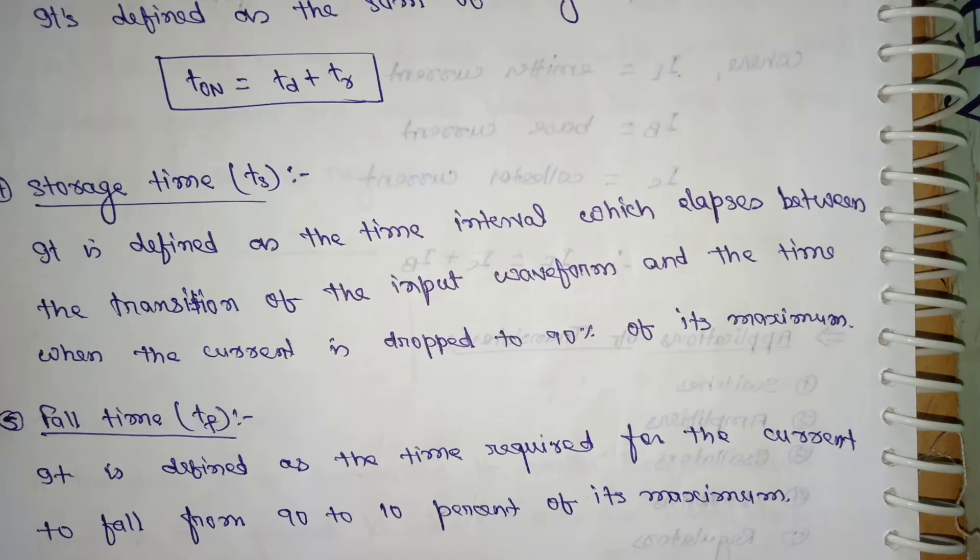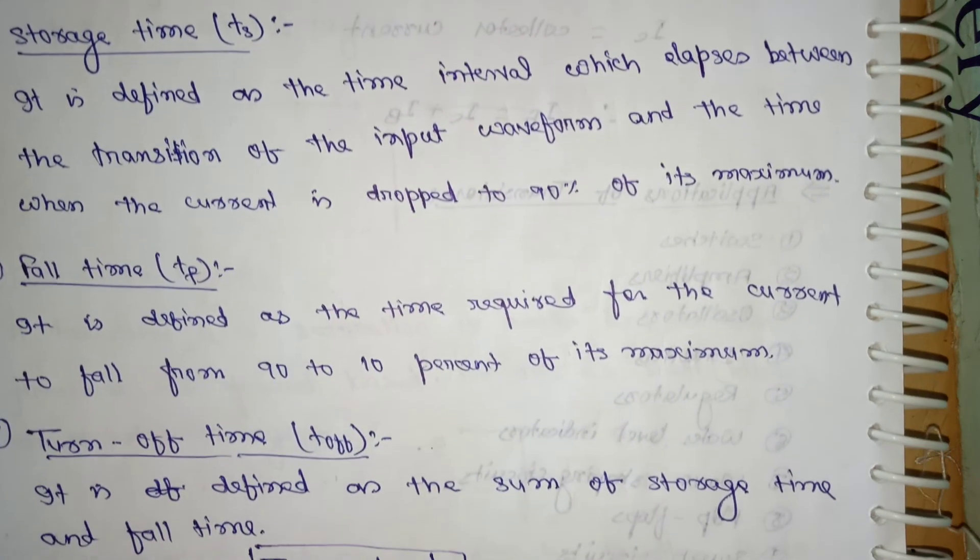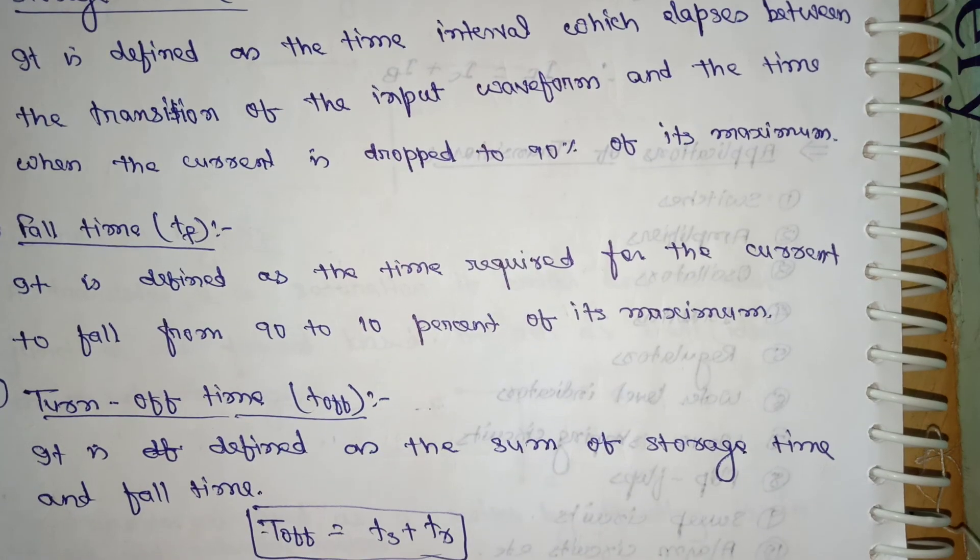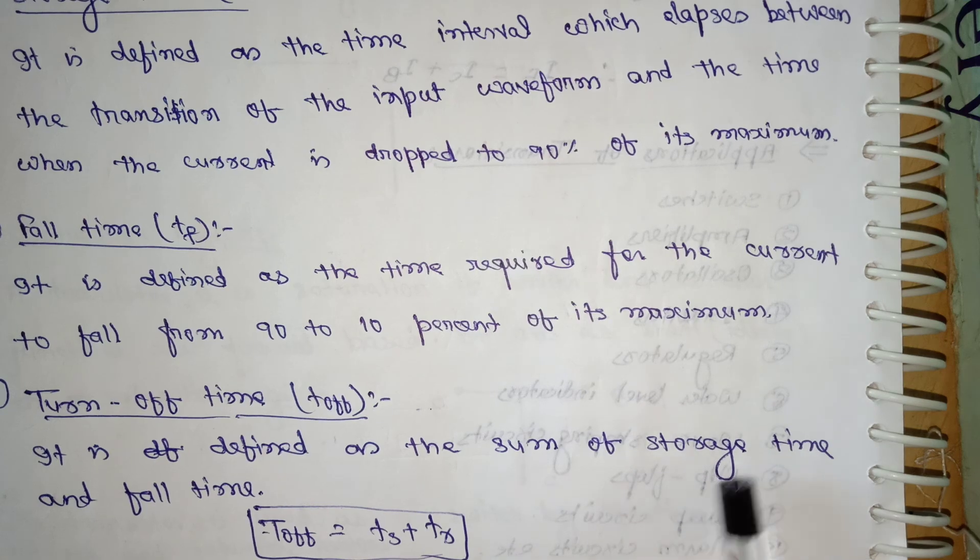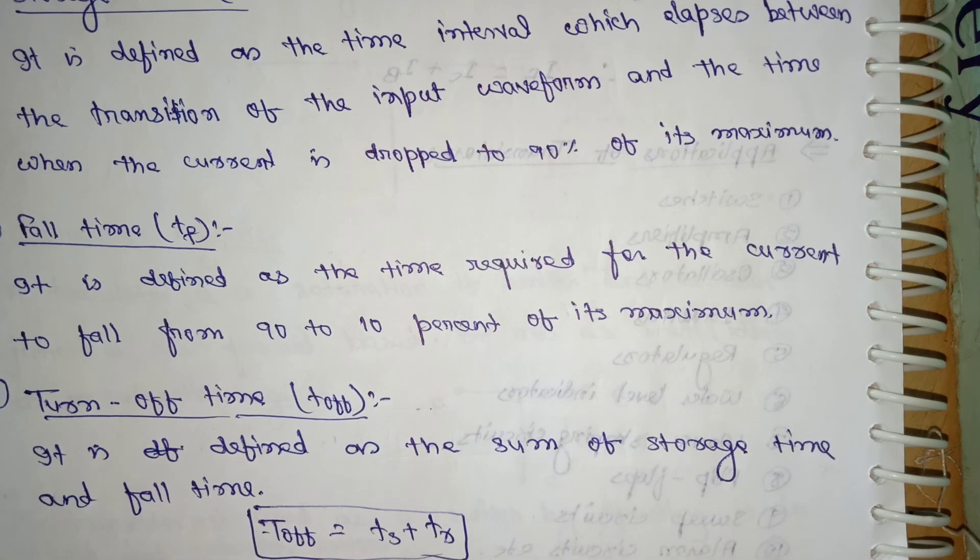Next, fall time. It is defined as the time required for the current to fall from 92 to 10 percent of its maximum. Next, turn-off time. It is defined as the sum of the storage time and the fall time. t_off is equal to t_s plus t_r. Thank you.